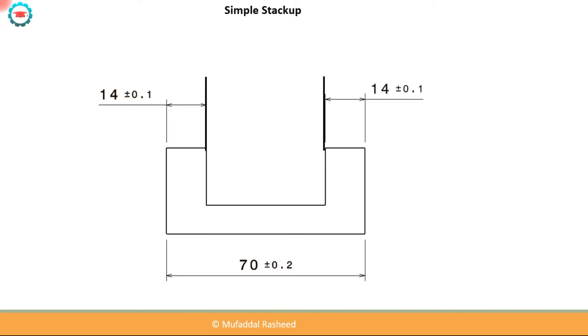To start with, let's have a look at this simple stack up problem. Now this is a part which is having these three dimensions. These two are dimension at 14 plus or minus 0.1 and the larger dimension is 70 plus or minus 0.2.